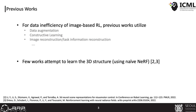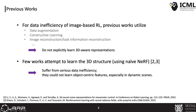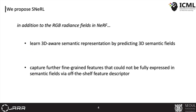For better data efficiency of image-based RL, previous work employed various techniques such as data augmentation or image reconstruction. However, the majority of encoders trained from those methods have limited capability in obtaining 3D structural information. Even though there have been few attempts to learn the 3D structure of the real world recently, they suffer from serious data inefficiency when applied in complex scenes with dynamic objects, which requires capturing object-centric features.